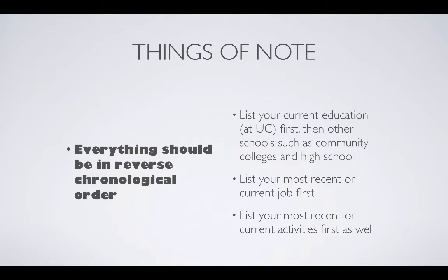Some things of note: everything should be in reverse chronological order. You're going to list your current education, your University of Cincinnati first, and then anything else comes after that. Community colleges or other advanced education you had, then high school. Nothing below high school. But just high school and UC is all you need. List your most recent or current job first. This is a tough part. The general rule is whatever job you started most recently, that one goes on top. The same goes for all your activities. Whatever activity you started most recently goes on top.